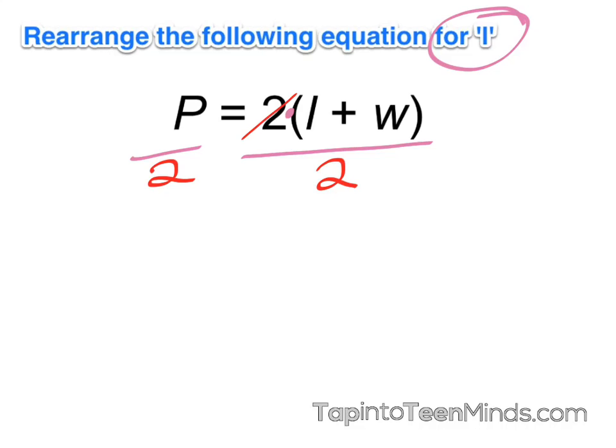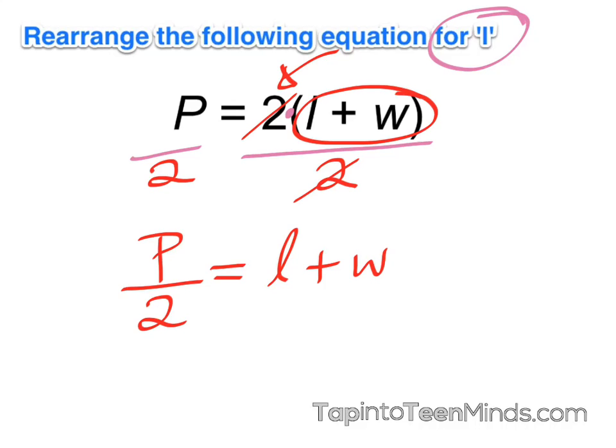Since 2 divided by 2 is 1, we're left with p over 2, or half of the perimeter, is equal to the length plus the width. This should make sense because originally over here, we were doubling this bracket. So in order to get rid of that 2, we had to half both sides.